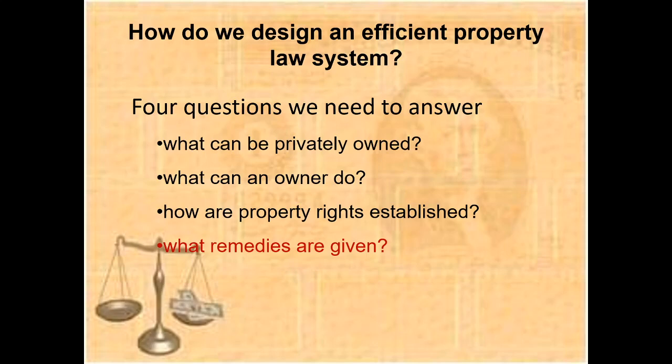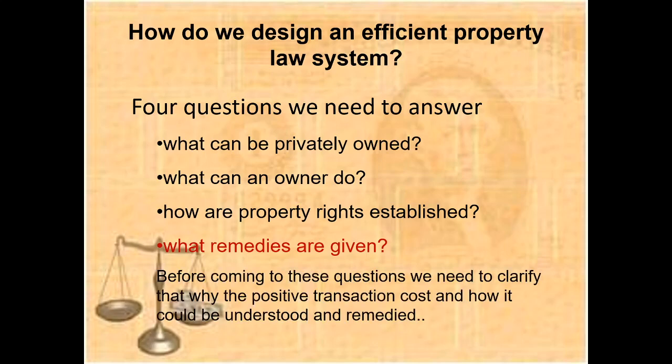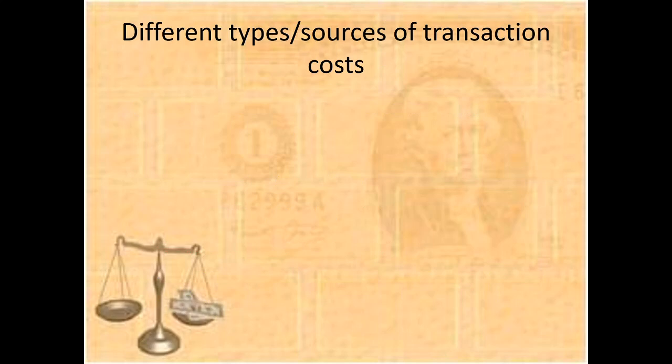These four questions are very important. We had already discussed what can be privately owned and what can an owner do with the property in earlier lectures. How are property rights established has also been reflected. But what about the economic aspect? Before coming to this question, we need to clarify the positive transaction cost and how it could be understood and remedied. This is the baseline for the rationalization of the establishment of property rights in law and economics literature.